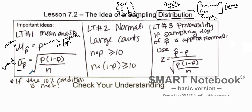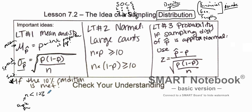For spread, we're talking about standard deviation. In order to find the standard deviation, the samples must be independent. To ensure independence, we use the 10% condition — similar to binomial. If our sample size n is less than 10% of the population size we're sampling from, then we have independence. We can then find the spread of the sampling distribution by taking the square root of P times (1 minus P) divided by sample size n.